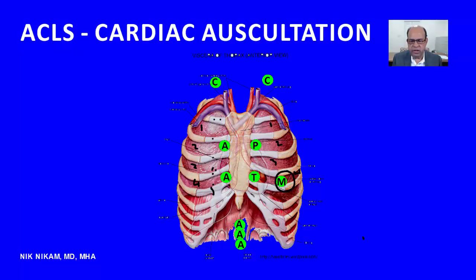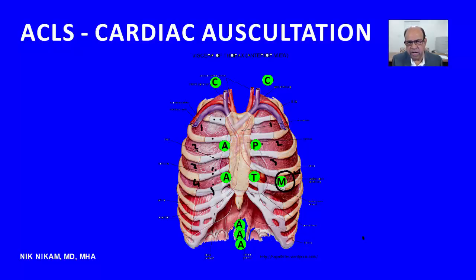The aortic area is located just to the right of the sternum in the second intercostal space. Opposite to that, the pulmonic area is located in the second intercostal space to the left of the sternum. The tricuspid valve is best heard in the fourth intercostal space just to the right of the sternum, whereas the mitral area is generally located in the fourth and sometimes in the fifth intercostal space — depending upon the size of the heart — in the mid-clavicular line.